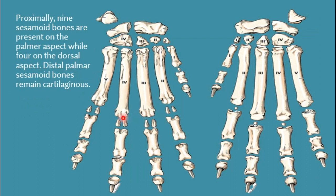Now let's discuss the sesamoid bones present in the digits of dog. There are sesamoid bones present between the first digit and metacarpal bone, and between the first digit and second digit. Total nine sesamoid bones are present at the palmar aspect between the metacarpal bones and first phalanges, while four sesamoid bones are present at the dorsal aspect between the metacarpal bone and first phalanx.